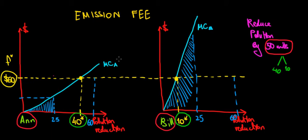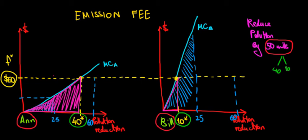Even though one company reduces pollution more and the other reduces pollution less — N reduces 40 units of pollution — her cost of reducing the pollution is the area below the marginal cost curve, which is the entire triangle over here. We compare this with Bill, who only reduces 10 units of pollution, so that's a smaller triangle. We might say Bill pays less to reduce pollution, but that's not true, because we also have the tax on actual production. Since N reduces 40 units, she does not reduce the remaining 20 units — we assume she can produce at most 60 units of pollution — so she actually pollutes for 20 units, meaning this tax is an additional cost that N will incur from the emission fee.